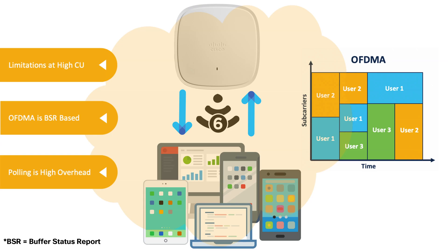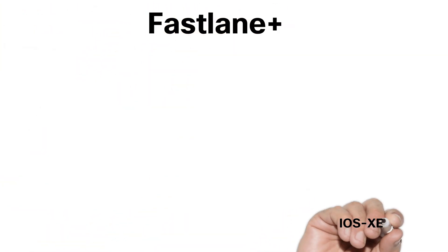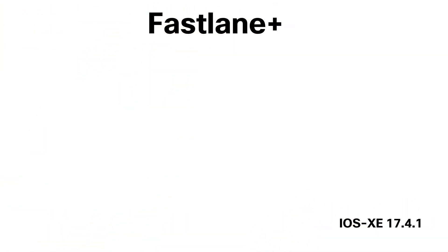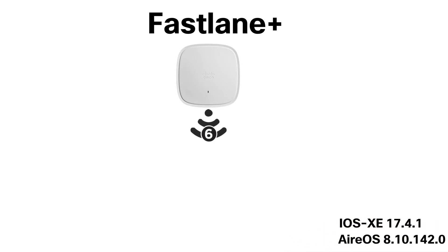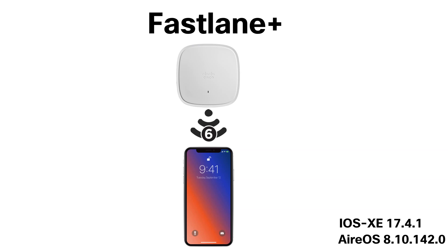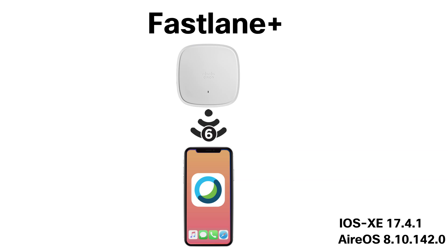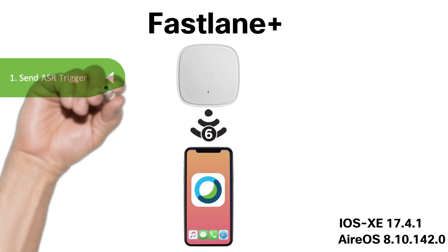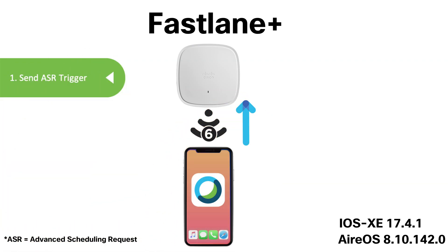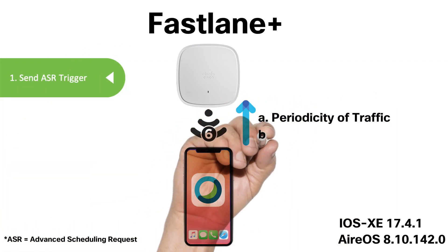Hence, users begin to receive a worse client experience. Fastlane Plus, introduced in IOS-XE version 17.4.1 and AireOS version 8.10.142.0 on the Catalyst 9130 access point, solves this problem by enhancing the existing Uplink OFDMA solution through cooperating directly with the joint Apple iOS clients. When an Apple iOS client decides to use a voice or video application in a network above 60% channel utilization, the client will automatically send an ASR trigger to the access point composed of data such as the periodicity of traffic and the traffic bitrate.